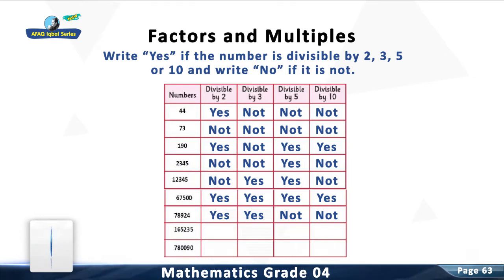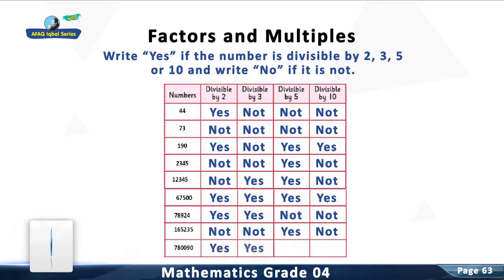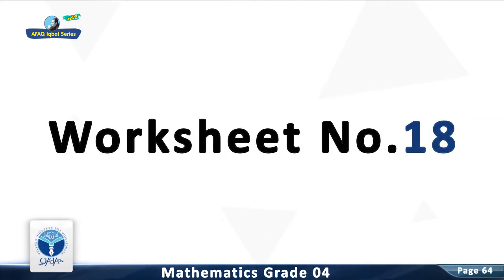Question 8: Check divisibility of the number by 2, 3, 5, and 10. It is divisible by 2. It is divisible by 3. It is divisible by 5. It is not divisible by 10. Question 9: Check divisibility of 780 by 3, 5, and 10. You are right. It is divisible by 2. It is divisible by 3. It is divisible by 5. It is divisible by 10. You have done a good job.